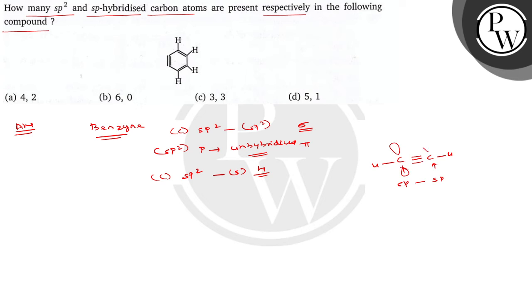Both pi bonds are formed by the overlapping of unhybridized p orbitals. When you have unhybridized p orbitals, that gives you the two pi bonds. But in this case, there is no unhybridized p orbital. This third pi bond is formed by the overlapping of sp2 orbitals only.